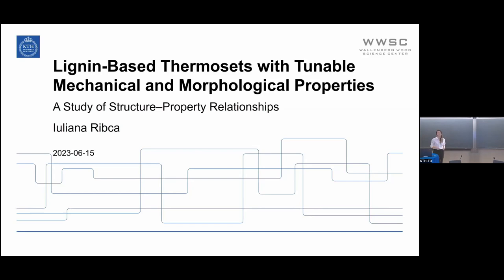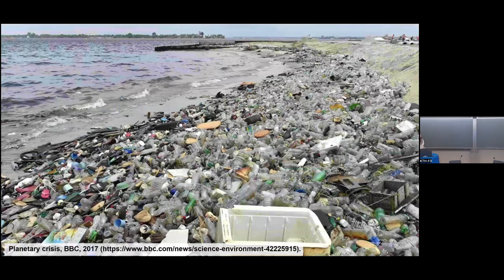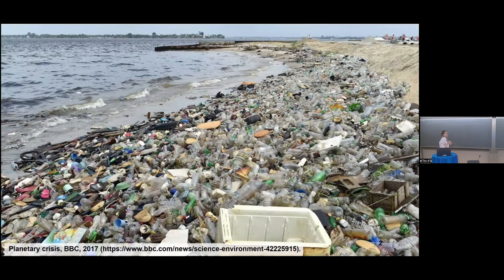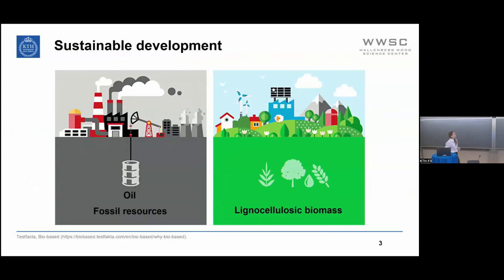Today I will talk about structure-property relationships in lignin-based thermosets. One of the great challenges of our time is the transition towards a sustainable society. What we can do is limit the consumption of fossil resources — we should stop using finite resources such as oil and replace them with more sustainable sources such as lignocellulosic biomass. The lignocellulosic biomass is mainly composed of cellulose, lignin, and hemicellulose, and today I will talk more about lignin.